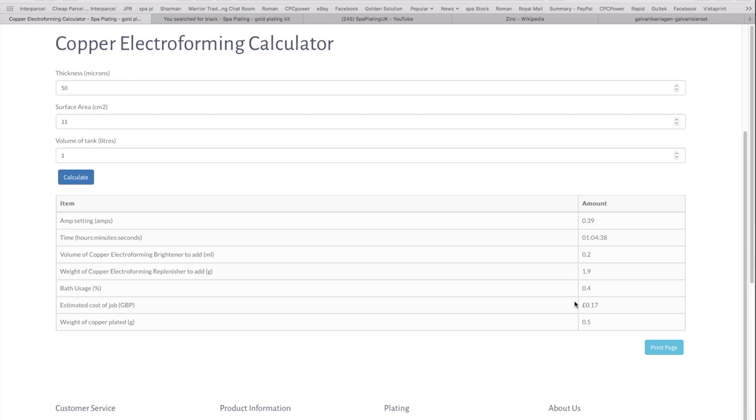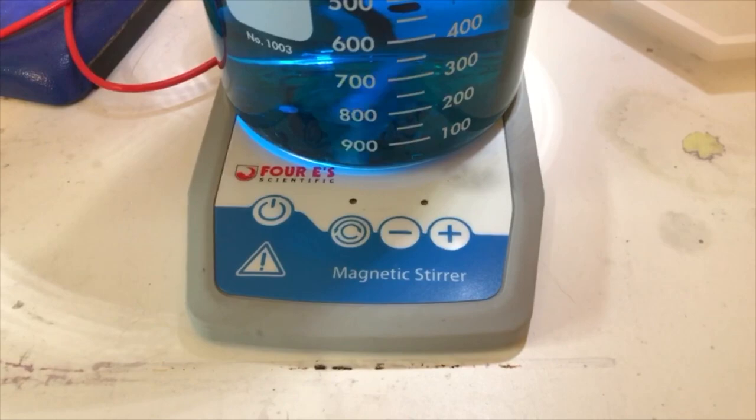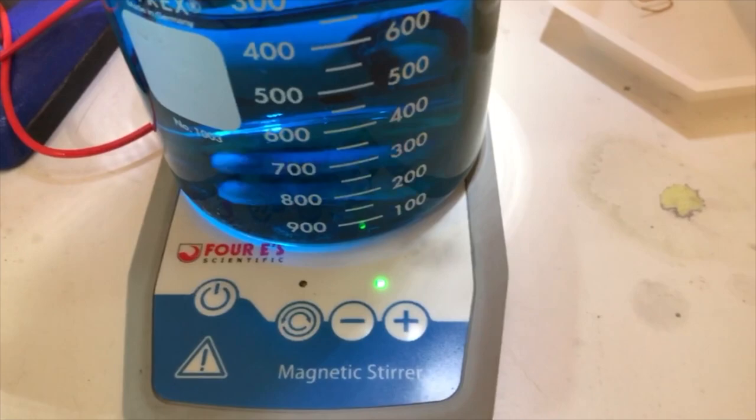It tells you the cost price and everything. These calculators are very easy to use if you know what you're doing, for tank plating and brush plating. This is the magnetic stirrer what I use, no hot plate. 20 degrees is fine.